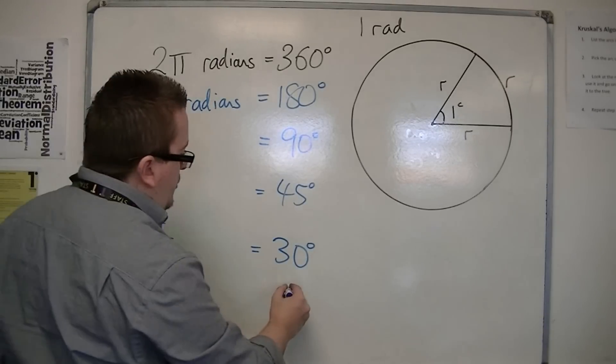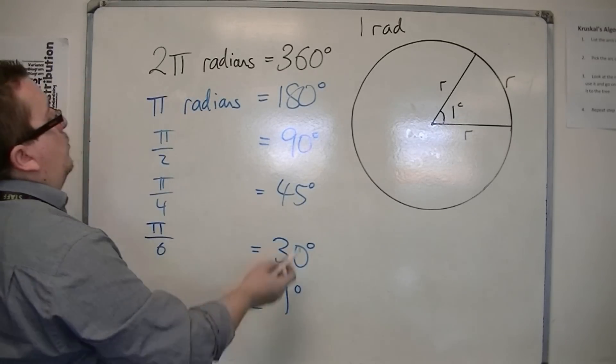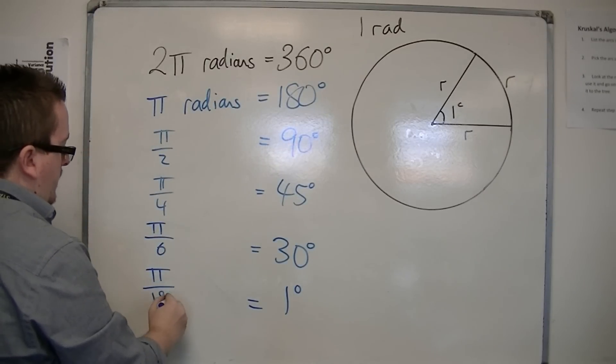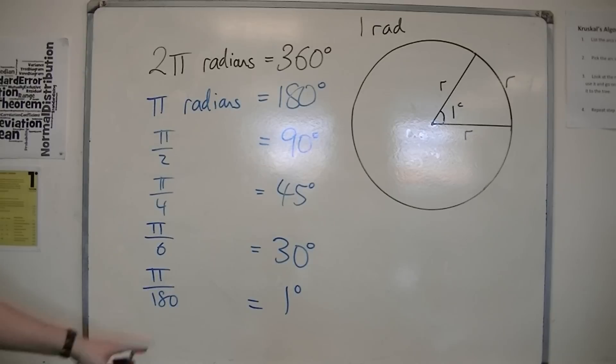So 1 degree would be 2 pi over 360, or pi over 180 radians.